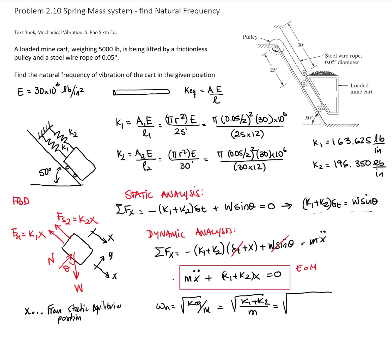I'll write the square root of the two spring constants we calculated, divided by 5000 divided by 386.4 to convert pounds to slugs.